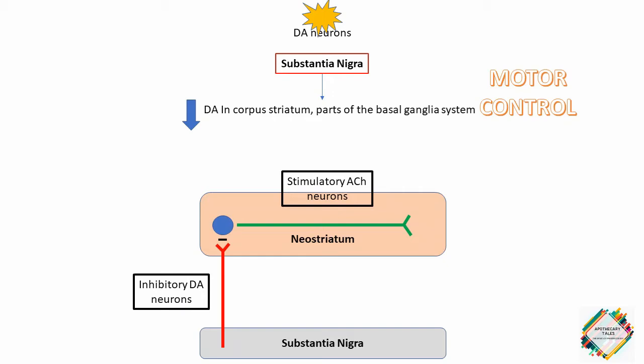These dopaminergic projections from the substantia nigra fire tonically rather than in response to specific muscular movements or sensory input. Thus, the dopaminergic system appears to serve as a tonic, sustaining influence on motor activity rather than participating in specific movements.